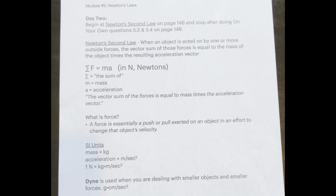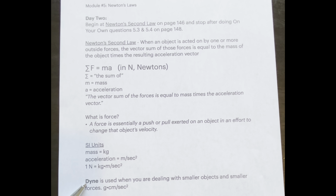The Newton is the SI unit of force and is defined as a kilogram meter per second squared. Any unit that has a mass unit multiplied by a displacement unit divided by a time unit squared could also be considered a unit of force. Thus, a gram kilogram per minute squared would also be a valid force unit. One force unit you might run into occasionally is the dyne, used when dealing with smaller objects and forces, equivalent to a gram centimeter per second squared. To give you an idea: holding a gallon of water pulls your hand down with a force of 40 Newtons, while a fly landing on your finger pushes down with approximately 1,000 dynes.